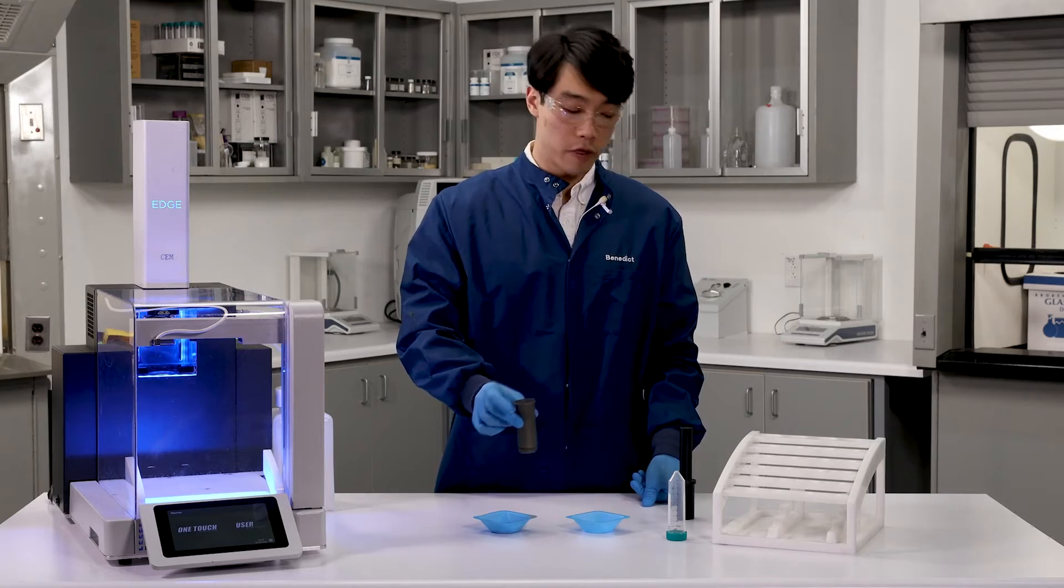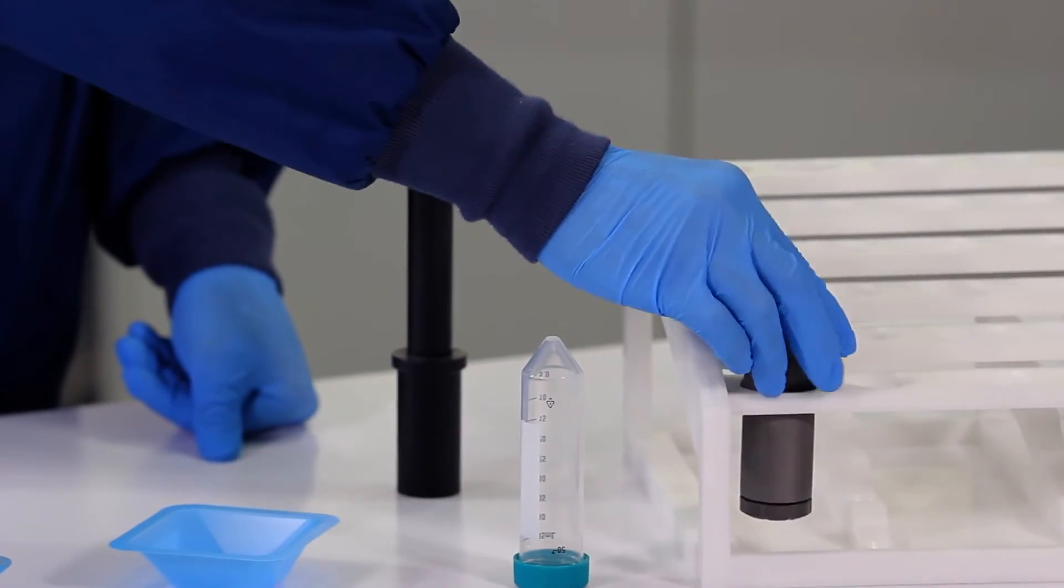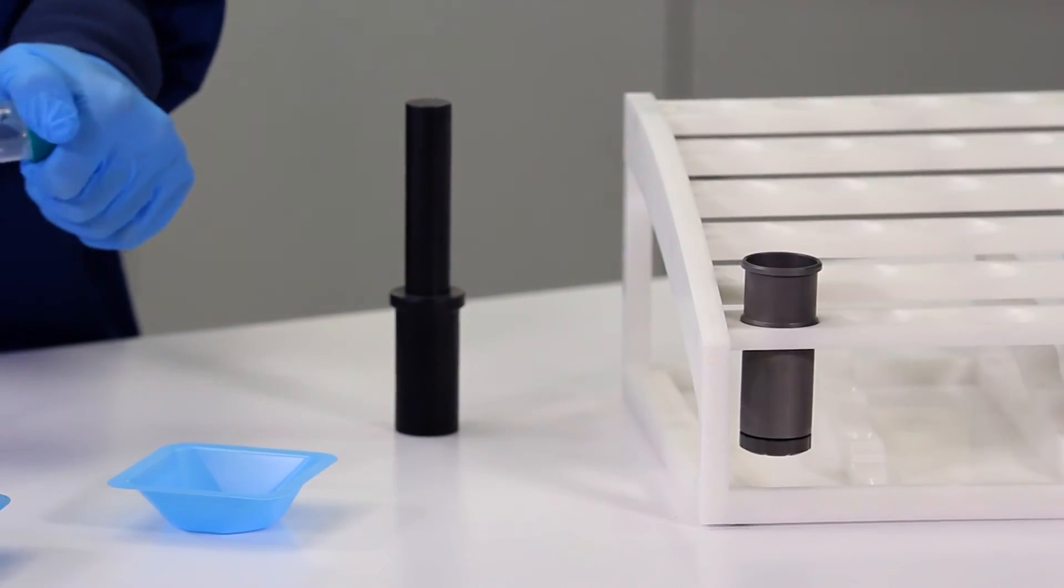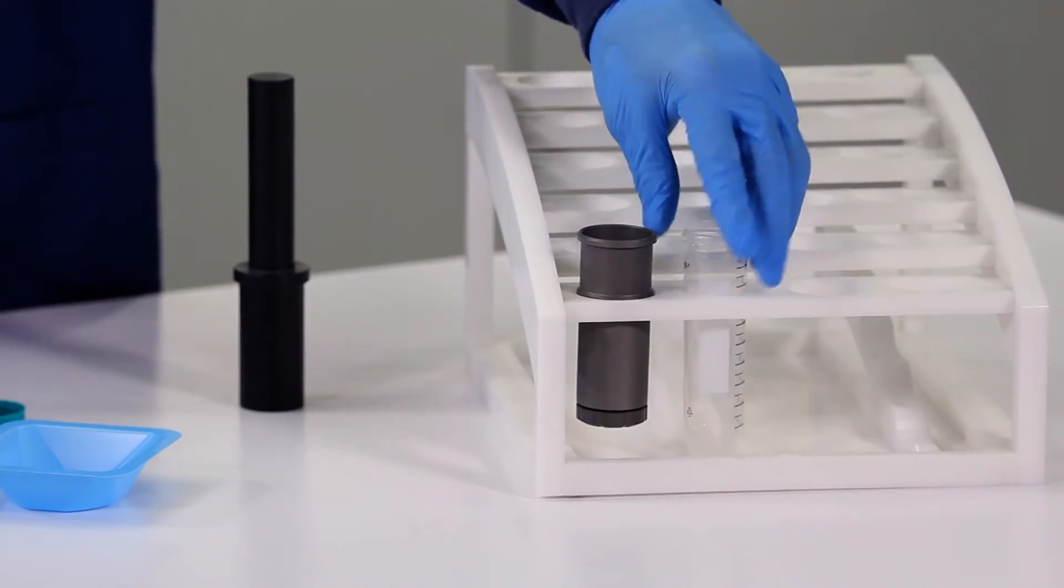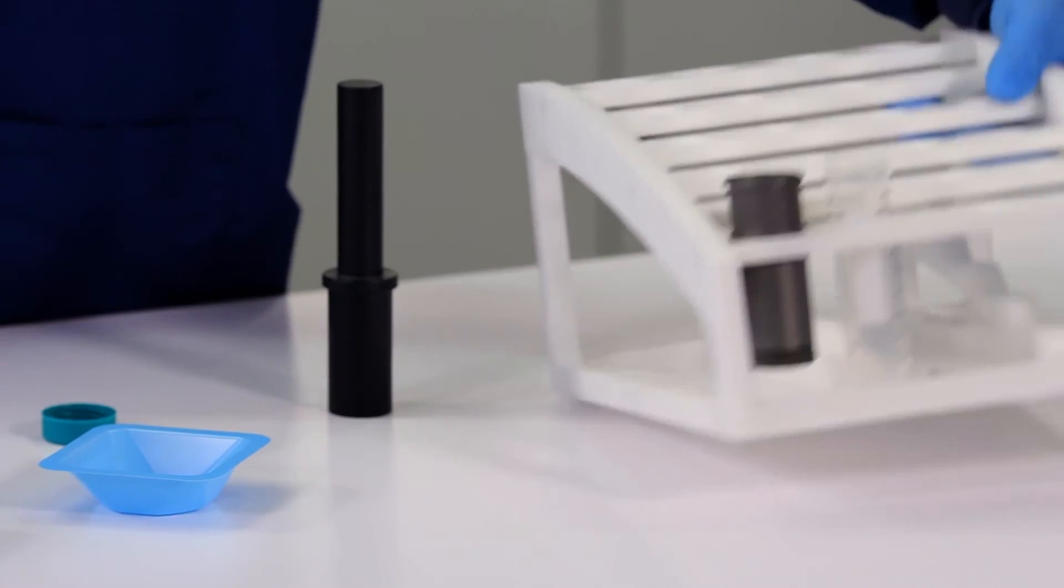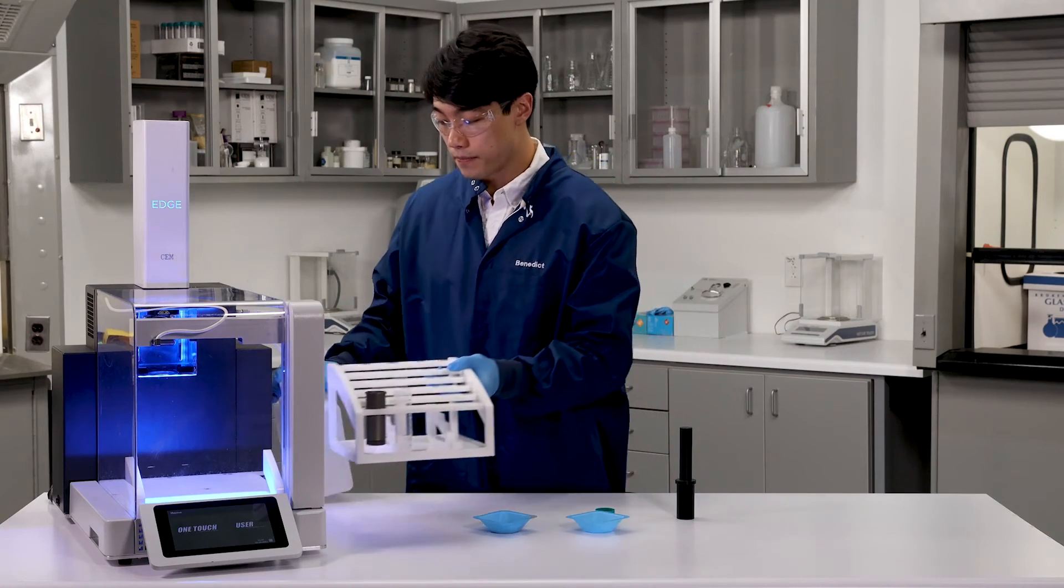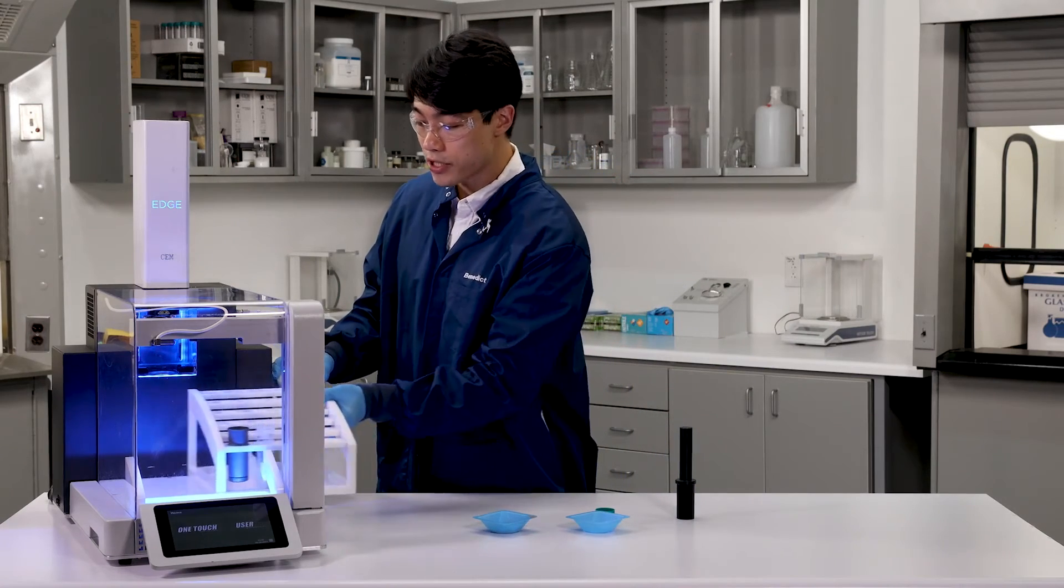I'll go ahead and take our Q-cup, add it into the rack. I'll take one of our centrifuge extraction vials, place it beside the Q-cup inside the rack. I'll take the whole rack, and slide it on into the Edge.